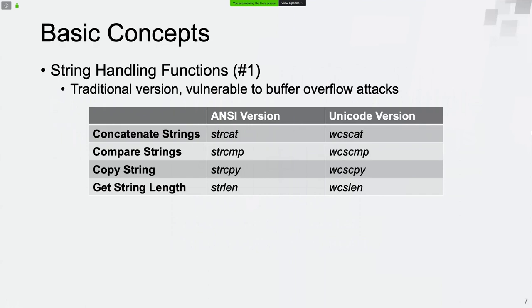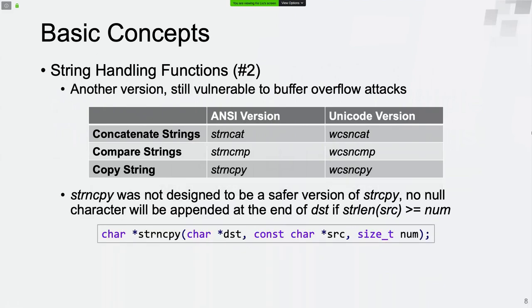Now we will talk about the string handling functions. The first one is the traditional version. These functions are very familiar and it is known that they are vulnerable to buffer overflow attacks. There is another version of string handling functions also vulnerable to buffer overflow attacks. Some people may think this is a security-enhanced version of the traditional functions, but it is not. For example, strncat was not designed to be a safer version of strcpy. If the length of the source string is equal or greater than the number of characters to be processed, no null character will be appended at the end of the destination string.